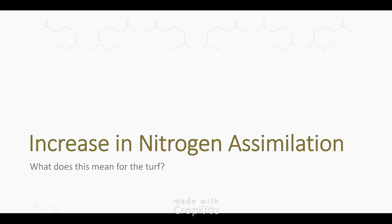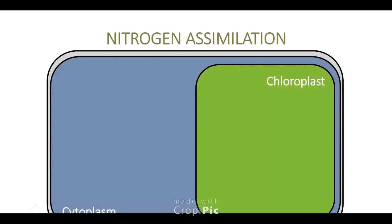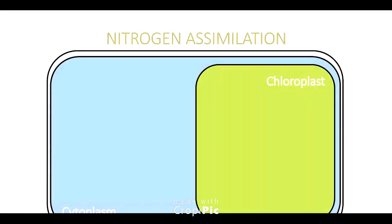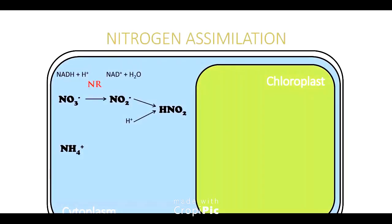So increase in nitrogen assimilation — what does this mean for the turf? This is really, really complex, and the only reason I have this stuff down in the slide is so you can see that I'm not making it up. But the big picture is, whether you apply nitrate, whether you apply ammonium (NH4), or whether you apply urea, which eventually turns into ammonium, it all turns into ammonia in the chloroplast.